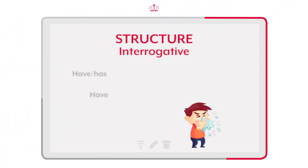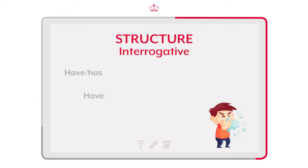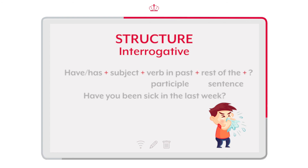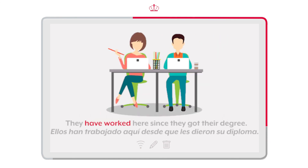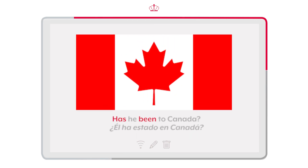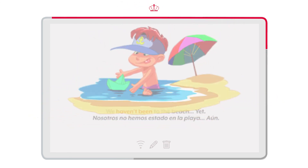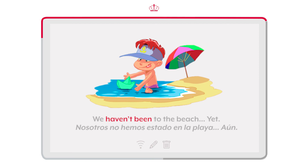In the interrogative form, we have to start with the auxiliary 'have' or 'has', then the subject, plus the past participle of the verb and the complement of the sentence. En la forma interrogativa, tenemos que empezar con el auxiliar 'have' o 'has', después el sujeto, más el verbo en pasado participio y el complemento del enunciado. Now let's go with the examples: She has lived here all her life. Ella ha vivido aquí toda su vida. They have worked here since they got their degree. Has he been to Canada? We haven't been to the beach yet.